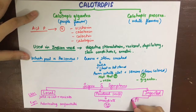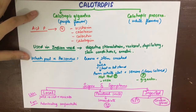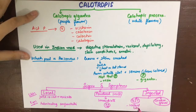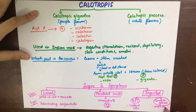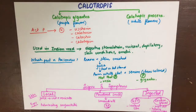If ingested, Calotropis can act as both a GI poison and a cerebrospinal poison. GI symptoms are similar to an irritant poison: acrid bitter taste, burning pain in the throat and stomach, nausea, vomiting, and diarrhea. Cerebrospinal symptoms include dilated pupils, tetanic convulsions, and collapse leading to death.